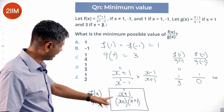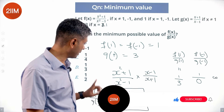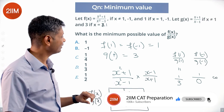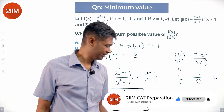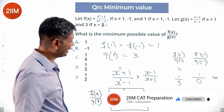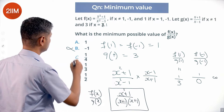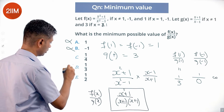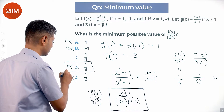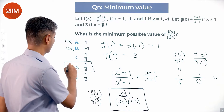Now, (x² + 1)/(x + 1)² cannot be negative, so f(x)/g(x) cannot be negative. That rules out any negative answer choices. I've already got f(1)/g(1) = 1/3, so I don't have to worry about values higher than 1/3. My minimum is either 1/3 or 1/4 — one of these two is the answer.